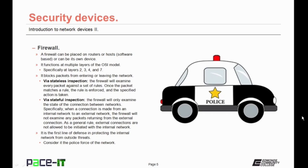Or it may use stateful inspection. This is when a firewall will only examine the state of a connection between networks. When a connection is made from an internal network to an external network, the firewall will not examine any packets returning from the external connection — it only cares about the state of the connection. As a general rule, external connections are not allowed to be initiated with the internal network. Firewalls are the first line of defense in protecting the internal network from outside threats — you can consider the firewall to be the police force of the network.